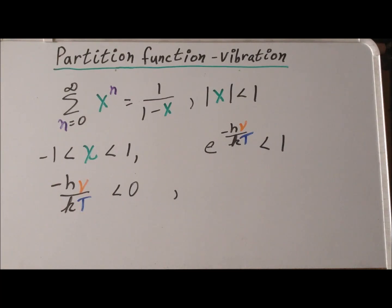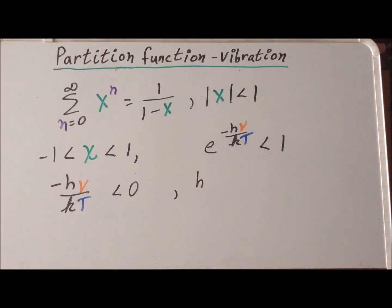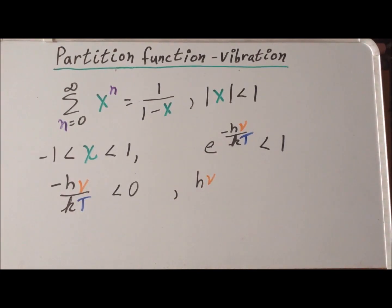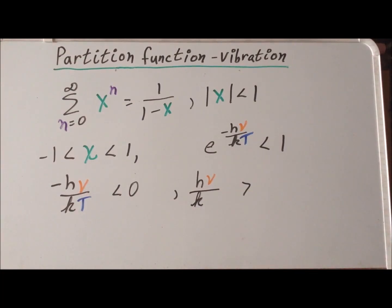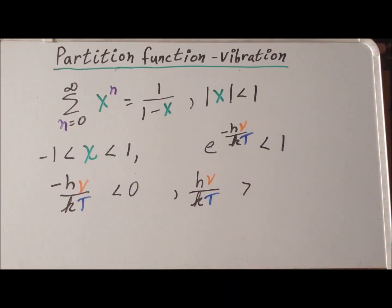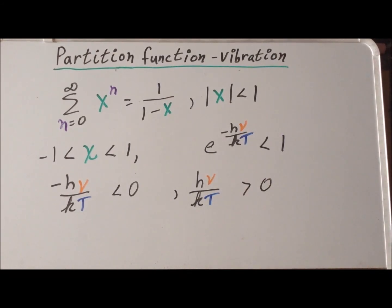To tidy this up, we can multiply each side by minus 1. So that turns the left side into h nu divided by kT. 0 times minus 1 is still 0. And then we know that when we multiply an inequality by a negative number, that we change the direction of the sign. So now this gives us that h nu divided by kT is greater than 0, which is simply the same as saying that h nu over kT is a positive value.